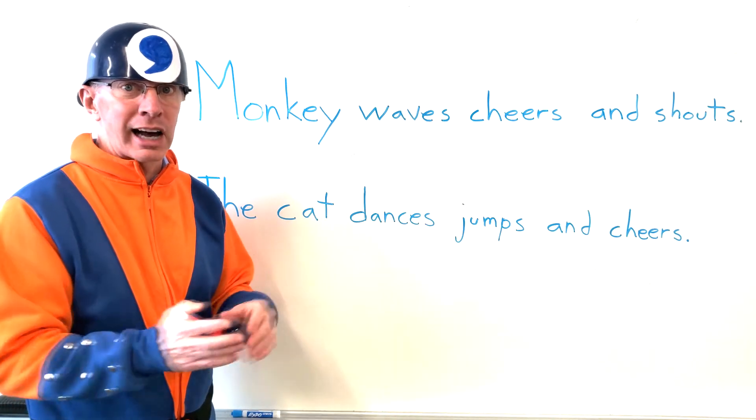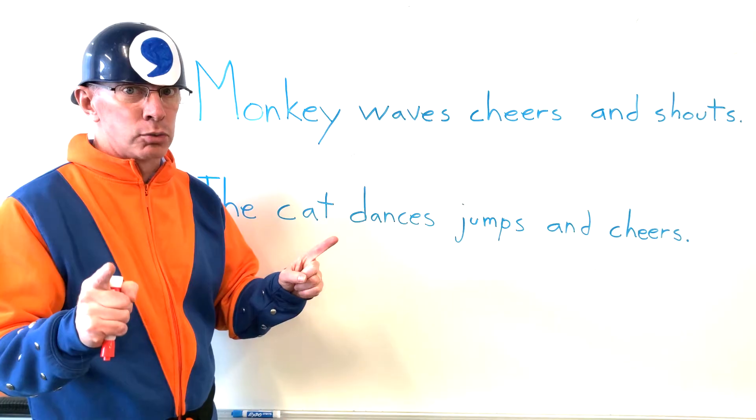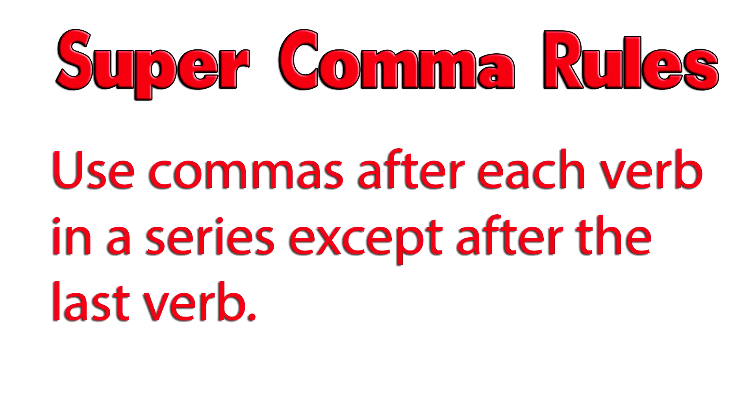So, how do you put a comma in a series of verbs? There's some rules. Let's take a look at the rules first. A series of verbs is three or more verbs that appear together in a sentence. Use commas after each verb in a sentence except after the last verb.